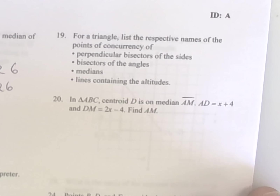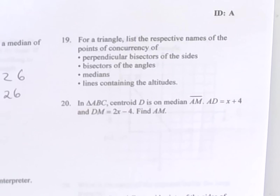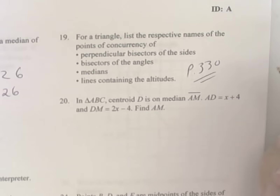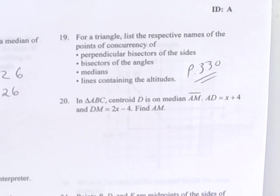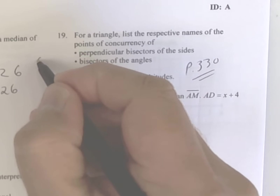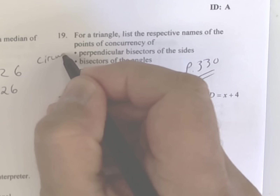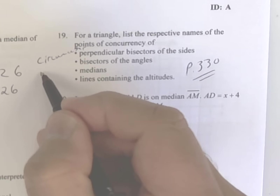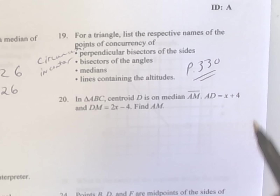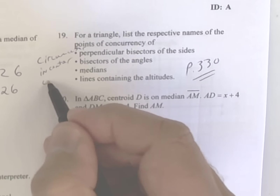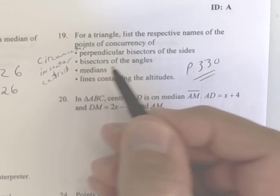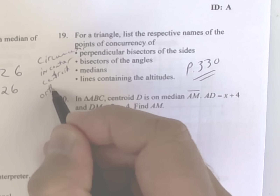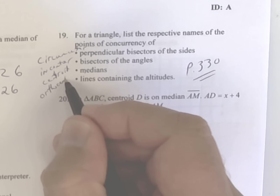Number 19: for a triangle, list the points of concurrency. Go to page 330 in your book. The perpendicular bisector gives the circumcenter; bisectors of an angle give the incenter; medians give the centroid; and lines containing the altitudes give the orthocenter. It's all in your book.